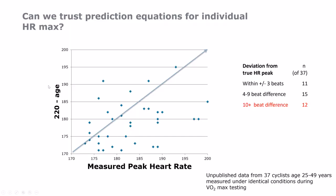For example, if you look at maximum heart rate — if you use 220 minus age or one of these other regression equations from population data — you can easily make a pretty big error and end up with an estimate of your maximum heart rate that is pretty far from reality. This spread shows this from 37 cyclists who were tested under identical conditions. Comparing their actual maximum heart rate with their estimated, you see that the deviation is big enough that it could easily result in pretty big errors in training intensity prescription.